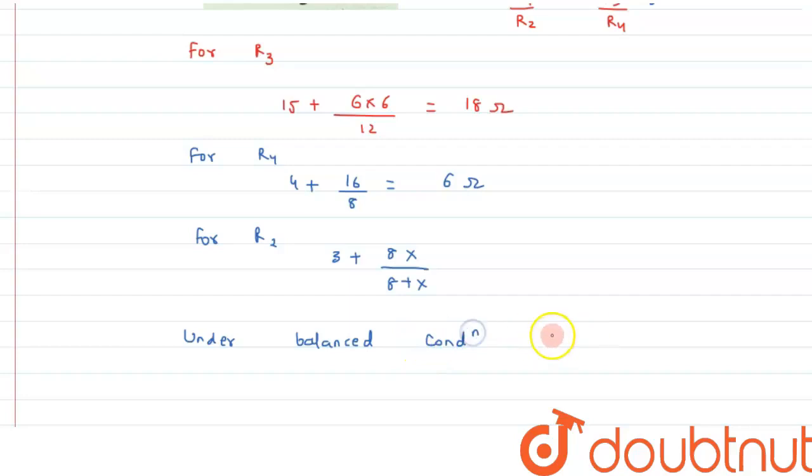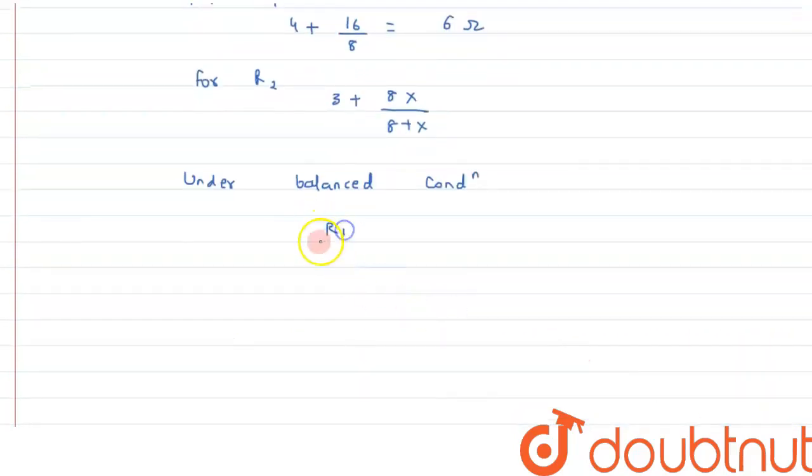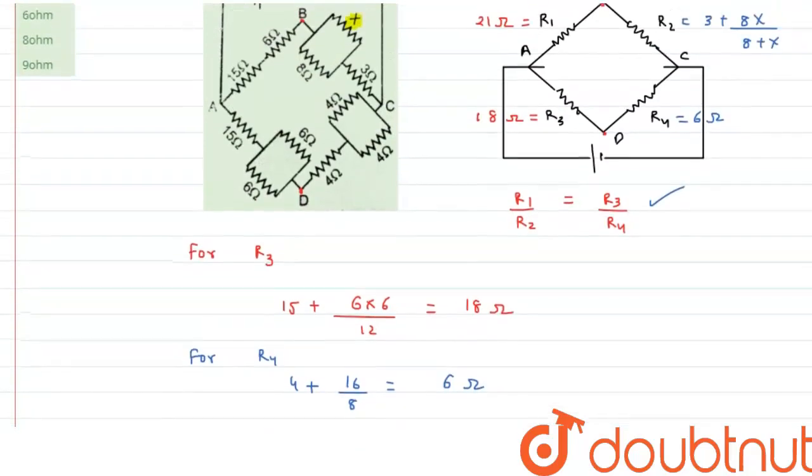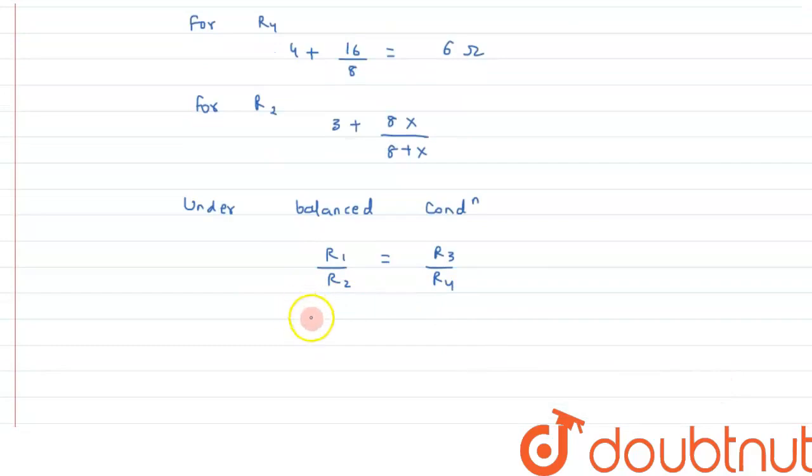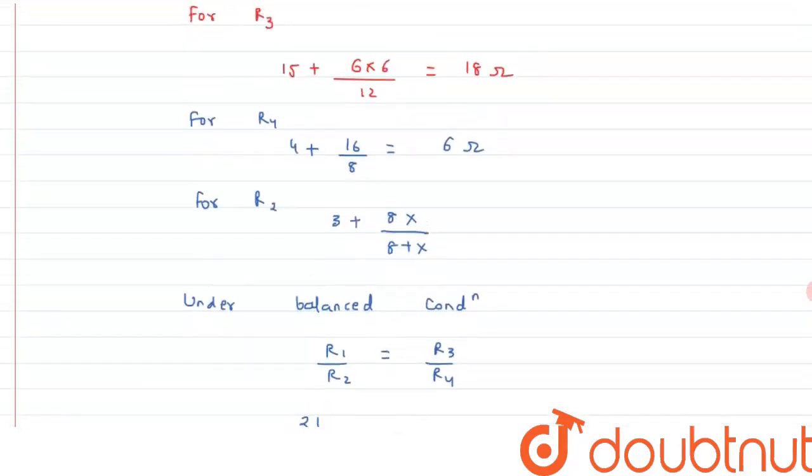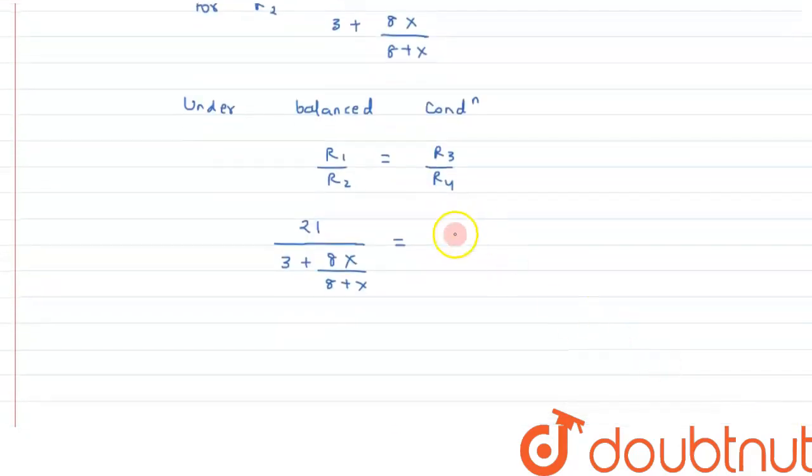Under balance condition we can write R1 by R2 equals to R3 by R4. Just we have to substitute the values now. R1 we have calculated it as 21, so 21 divided by 3 plus 8X divided by 8 plus X, and that is equals to R3 we have calculated it as 18, so here it is 18 by 6.